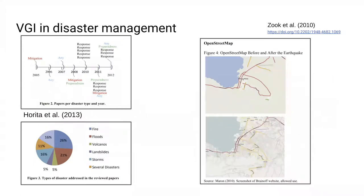We have seen several examples of using volunteer geographic information in disaster management applications. In a review paper from 2013, a lot of the papers and applications using VGI were related to the response stage of disaster management — meaning after a disaster has happened. This suggests again that the timeliness of VGI is what makes it special and why it's used in a stage where timely data is critically needed.